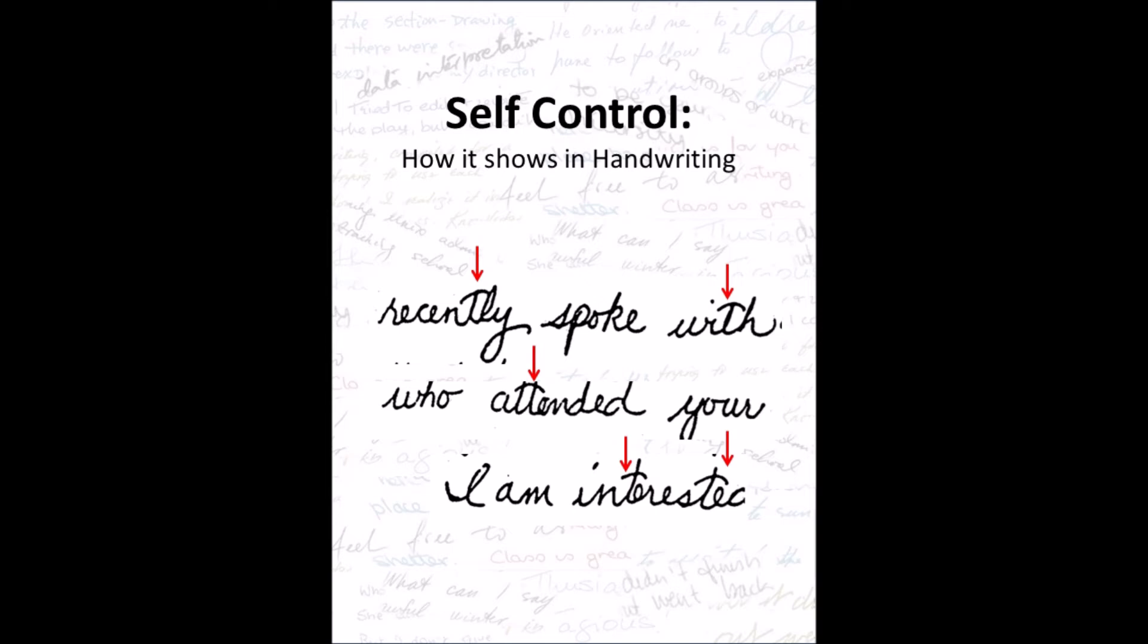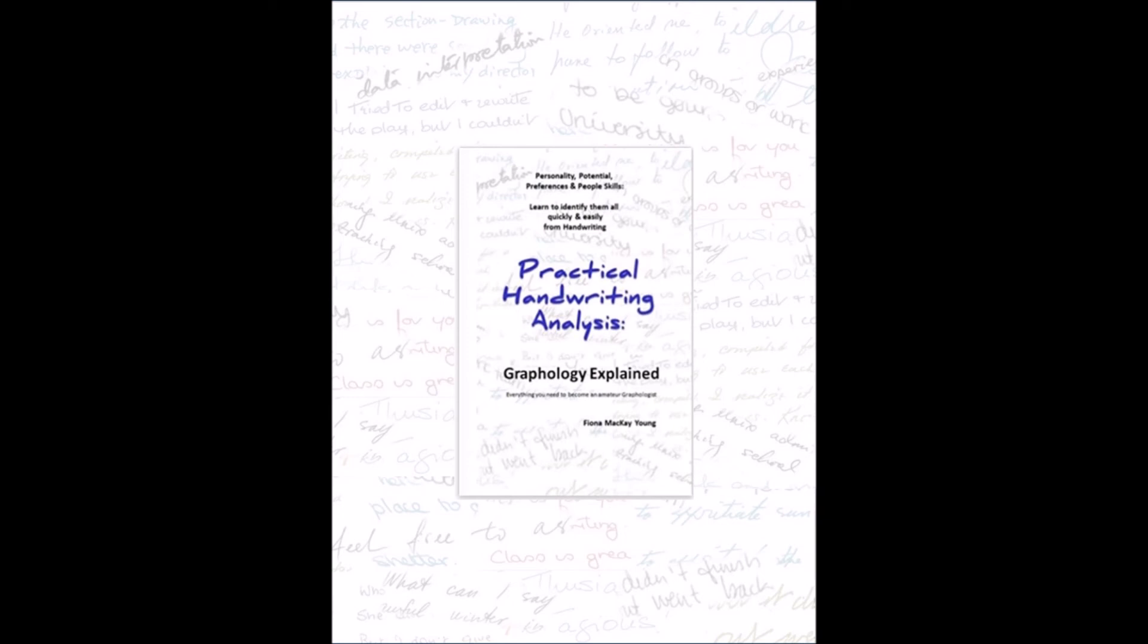Analyzing the rest of the writing can help you work out what this writer is controlling because with every t-bar as an inverted saucer shape, this trait is very strong in this writing.